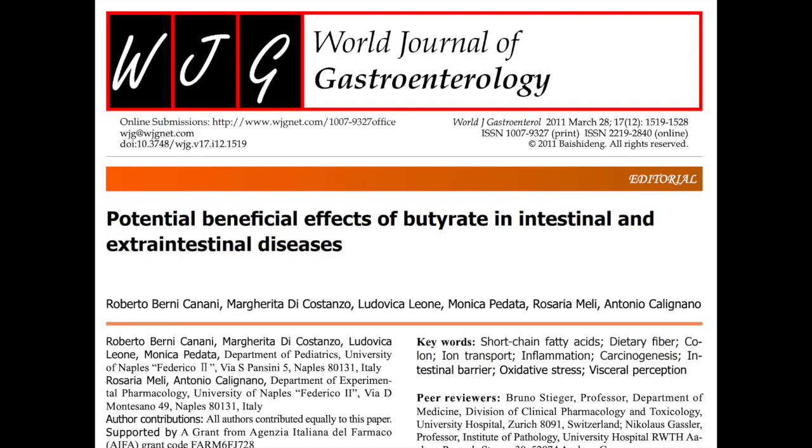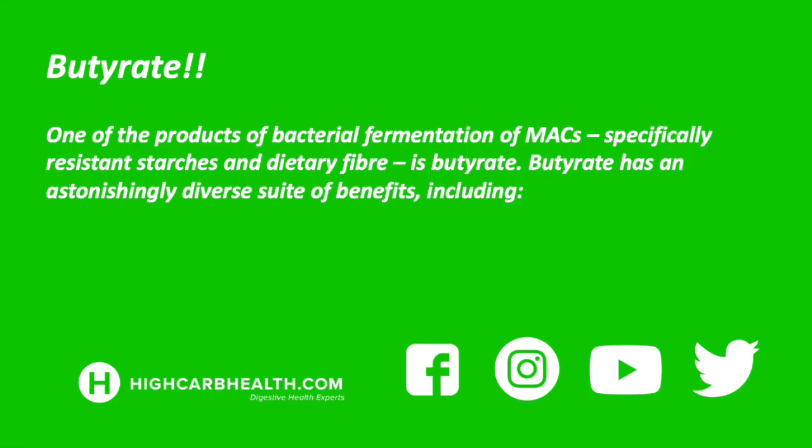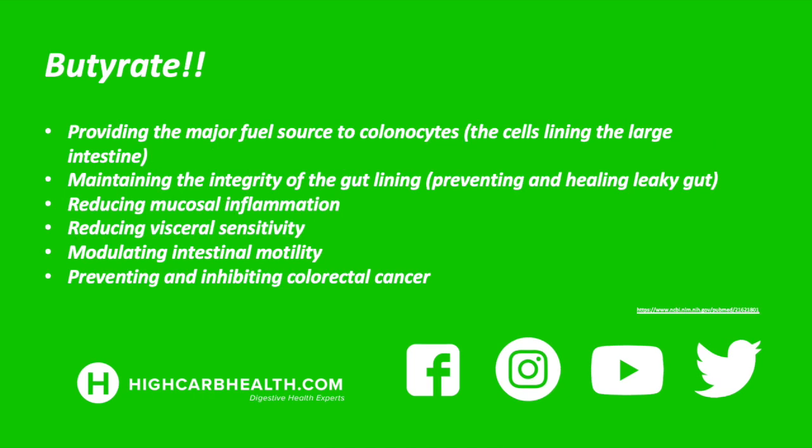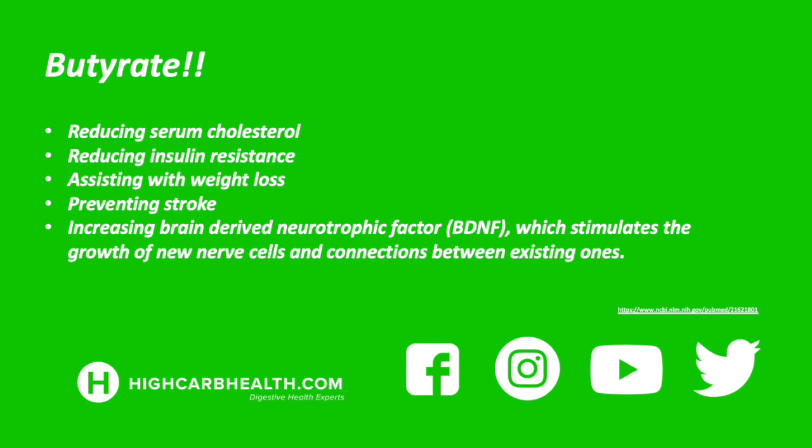Now let's talk about one of the products of bacterial fermentation of these MACs. Specifically, resistant starches and dietary fiber produce butyrate. Butyrate has an astonishingly diverse suite of benefits, including providing the major fuel source to colonocytes — the cells lining the large intestine — maintaining the integrity of the gut lining, preventing and healing leaky gut, reducing mucosal inflammation, reducing visceral sensitivity, modulating intestinal motility, preventing and inhibiting colorectal cancer, reducing serum cholesterol, reducing insulin resistance, assisting with weight loss, preventing stroke, and increasing brain-derived neurotrophic factor (BDNF), which stimulates the growth of new nerve cells and connections between existing ones.